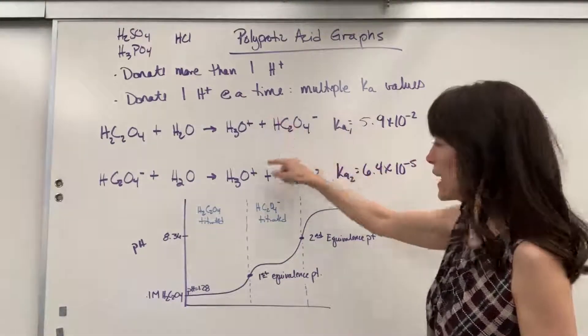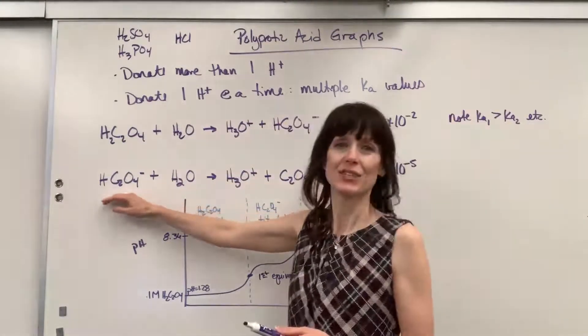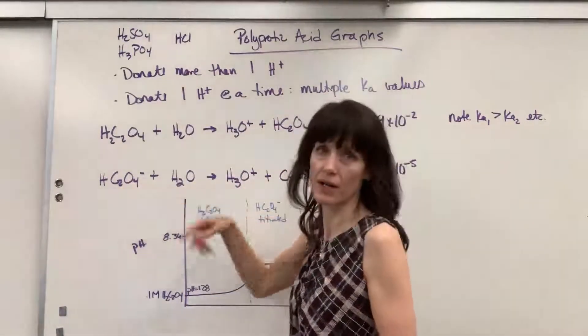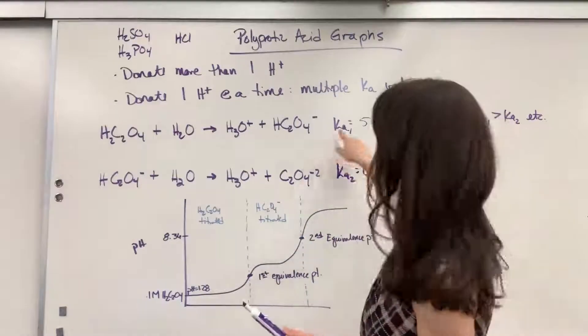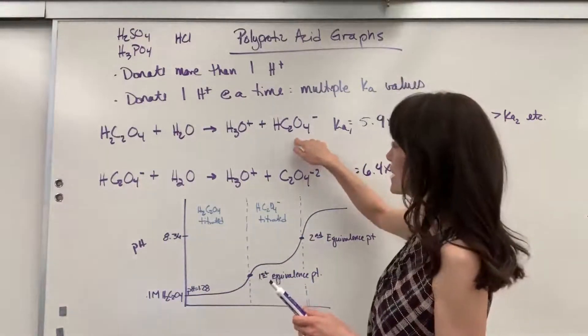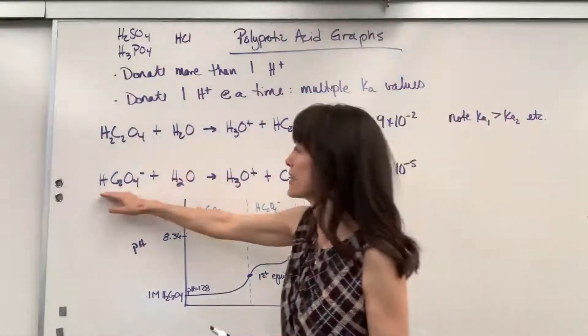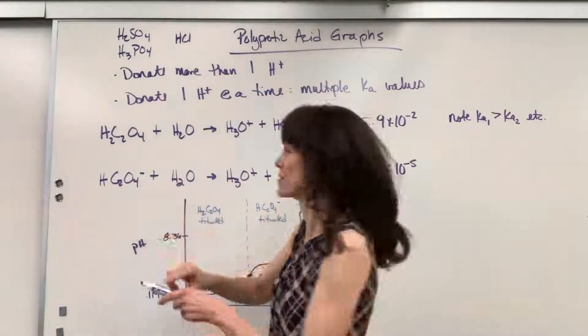Now, this species, the hydrogen oxalate, it can donate this second hydrogen. So it can do a separate reaction with water. Here, little reminder, this hydrogen oxalate in this reaction is the conjugate base, but down here is the acid. That is amphoteric. Little reminder, that is an amphoteric species, meaning it can act as an acid or a base.